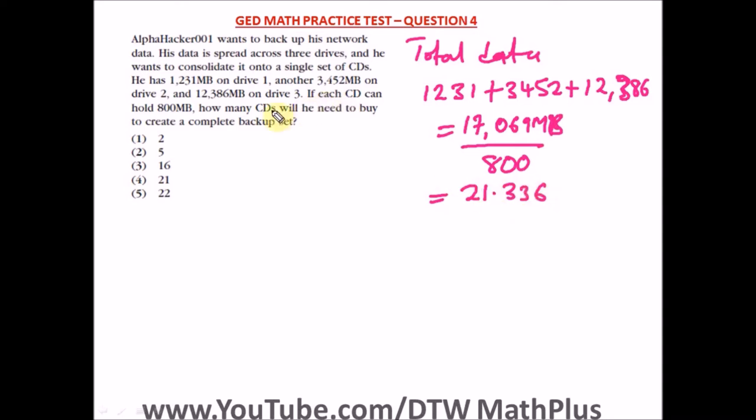So it's going to need 21.336. But the question asks how many CDs will he need to buy to create a complete backup set. We can't buy a partial CD, that's half a CD. Because this 21.336 means he won't complete a whole full CD here. And he can't buy a partial CD, so he needs to buy an extra one, a full one. So we have to add one to 21, which will give us 22.